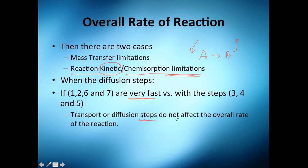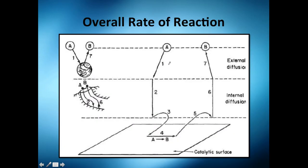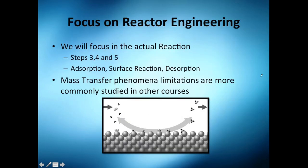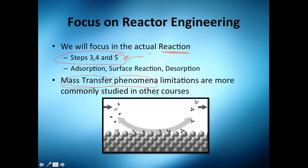We say the overall rate of reaction is limited by kinetics or chemisorption — that's steps 3, 4, and 5. Steps 1, 2, 6, and 7 represent mass transfer phenomena. The scope we're going to analyze the most is steps 3, 4, and 5, which are more about the reaction itself. The other steps are more about mass transfer phenomena, operations, and those related studies.